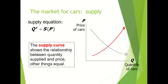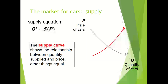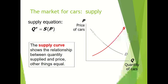When the price of input — that is, the price of steel — increases, the cost of production will rise. When cost of production rises, quantity supplied decreases. Hence, price of input has a negative relation with quantity supplied, and price of car has a positive relationship with supply of car. So it is a positively sloped supply curve. The supply curve shows the relationship between quantity supplied and price, other things equal.